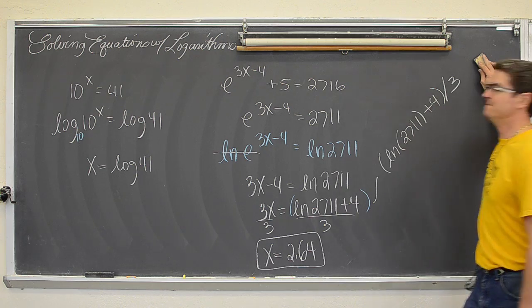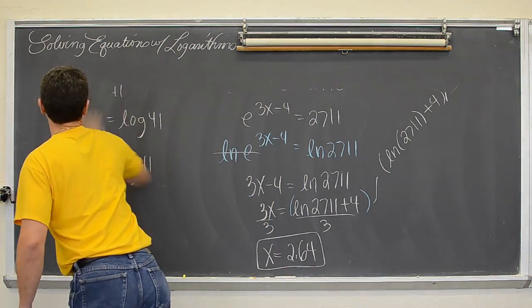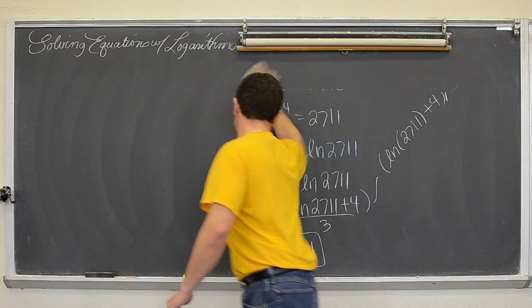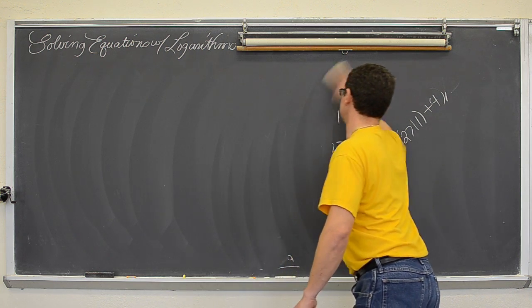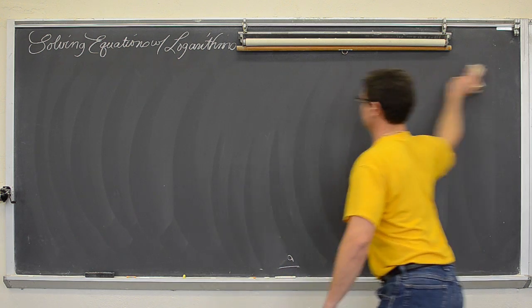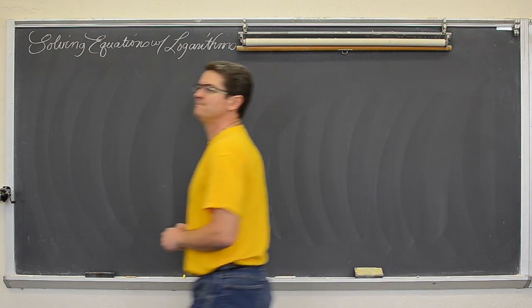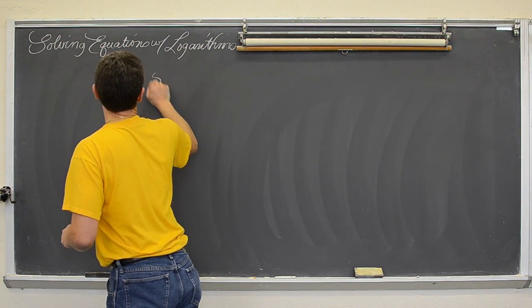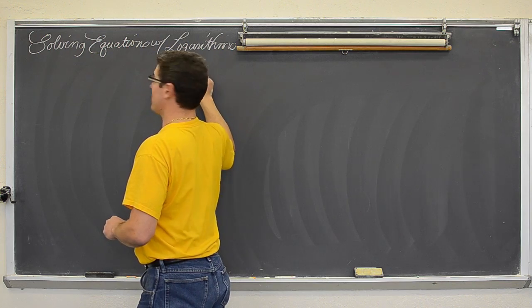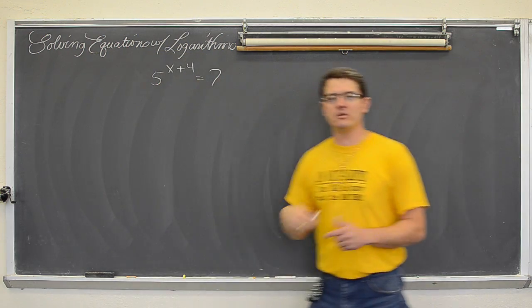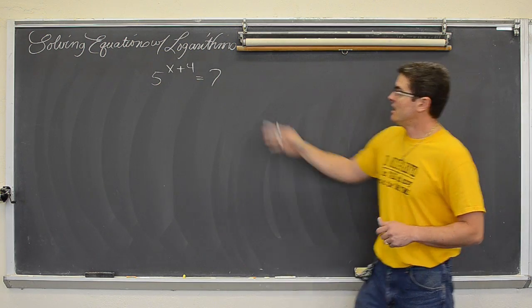Alright, moving on. Next example. How about 5 to the x plus 4 equals 7. Just to show you one where you don't just cancel out the base. No e, no 10. So it doesn't matter what log you use.